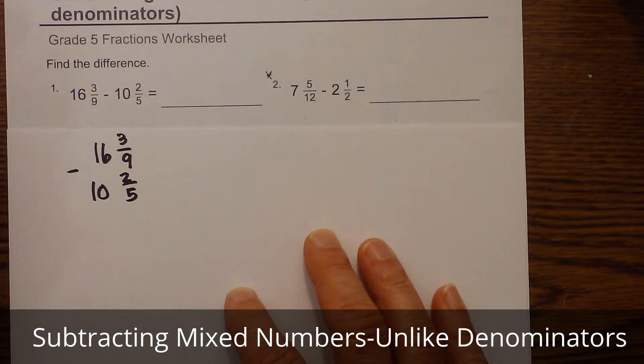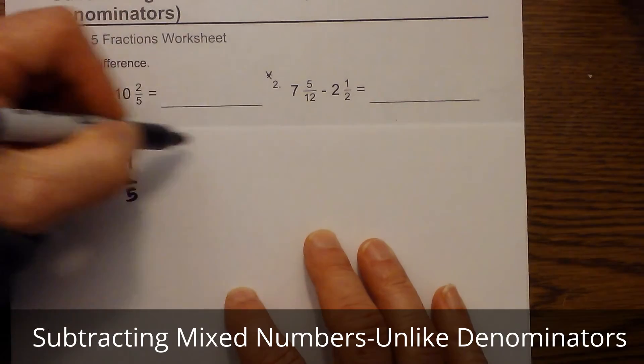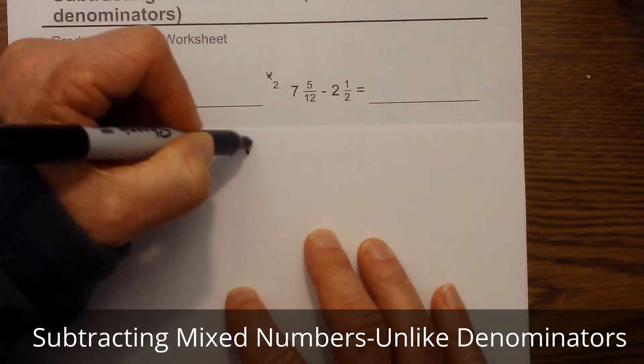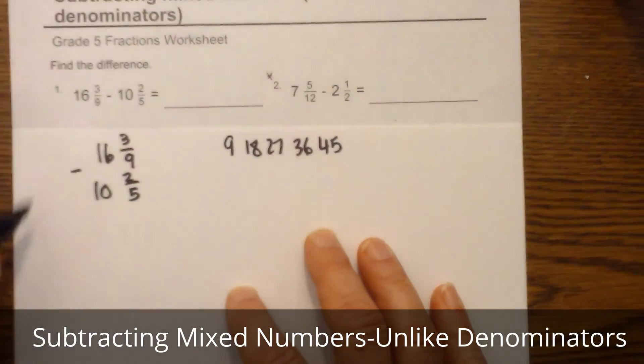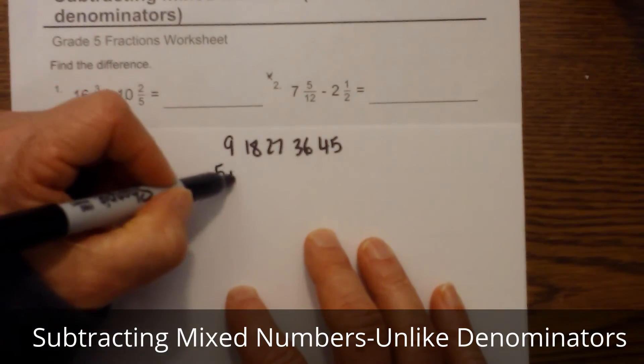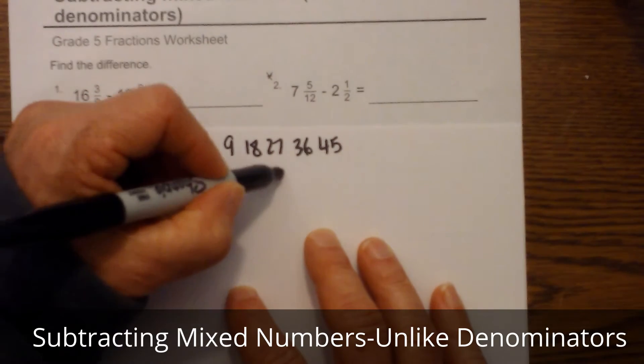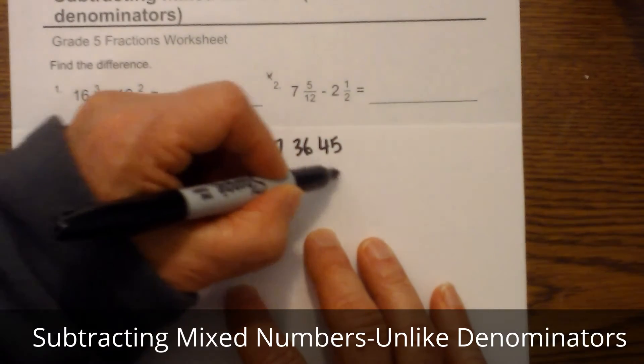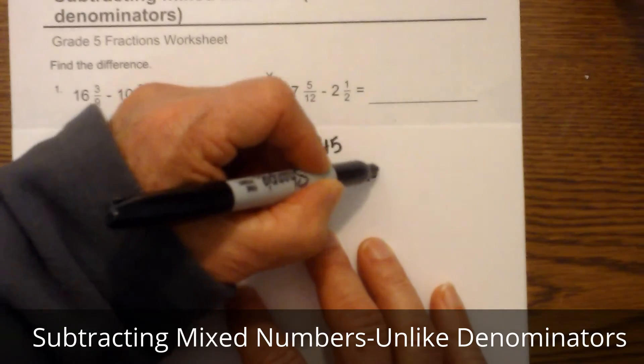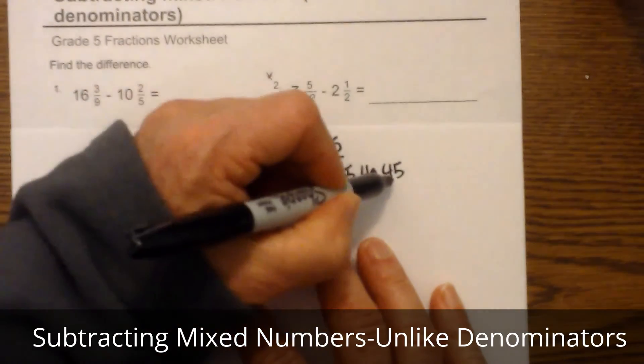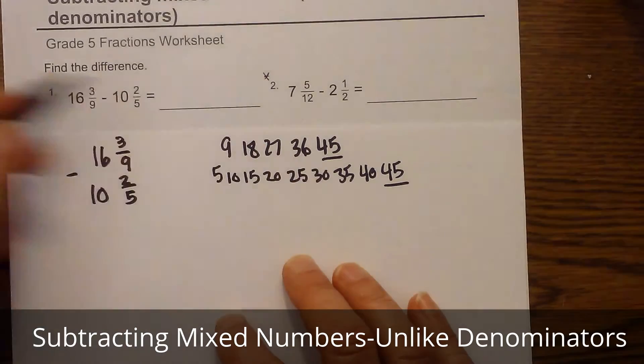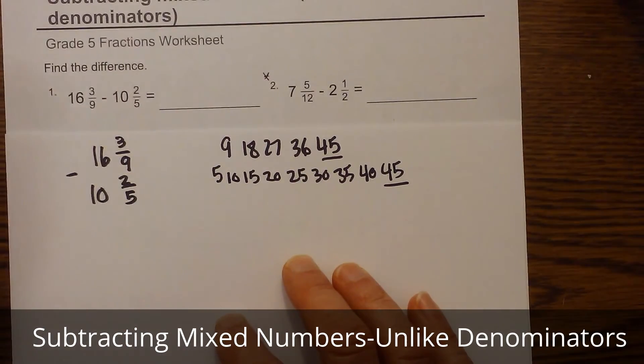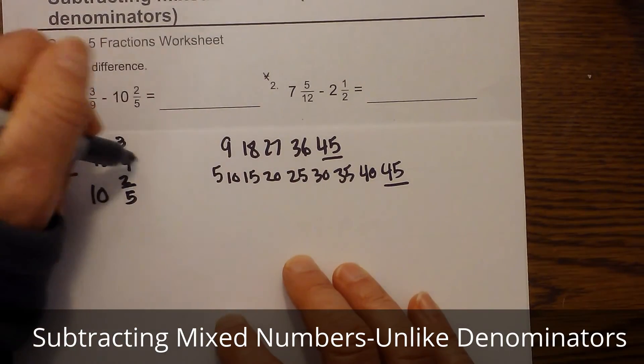Okay, I'm going to rewrite it: sixteen and three ninths minus ten and two fifths. We're going to subtract. I'm going to start with the fraction. I need to find a common denominator. I'm going to start with 9, 18, 27, 36, 45. We have 5, 10, 15, 20, 25, 30, 35, 40, 45. So I know that's the common denominator. Okay, nine goes into forty-five five times.